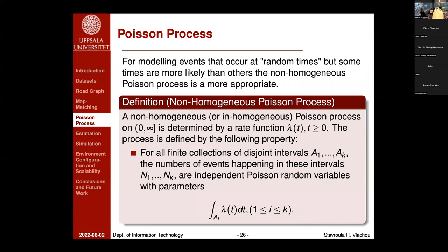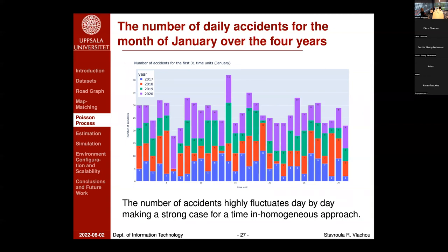The generalization is the non-homogeneous Poisson process, where instead of a constant λ we have a rate function λ(t). For all finite collections of disjoint intervals, the event counts are independent Poisson variables with parameters given by the integrated rate function over each interval. The non-homogeneous Poisson process is more appropriate when events happen at random times but are more likely at certain times than others. This is evidenced by the number of daily accidents for January over four years, which highly fluctuates day by day — making a strong case for a non-homogeneous approach.